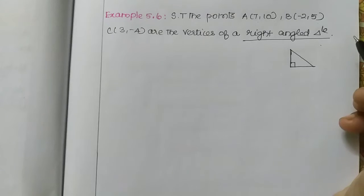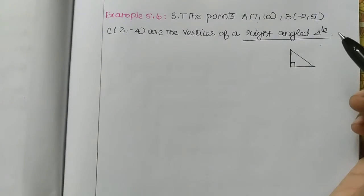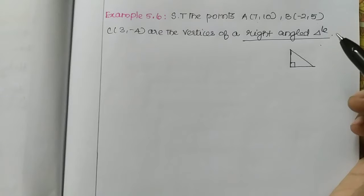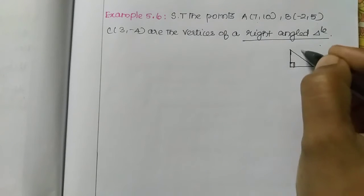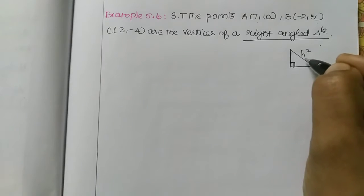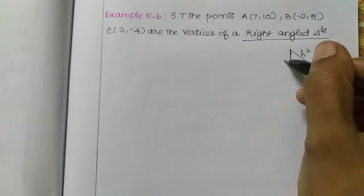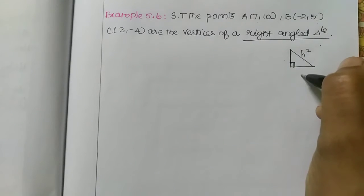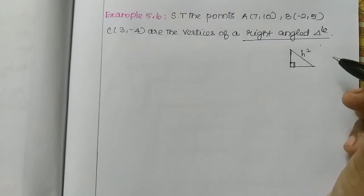To prove a right-angle triangle, we use the Pythagorean theorem: the square of the hypotenuse is equal to the sum of the squares of the other two sides.